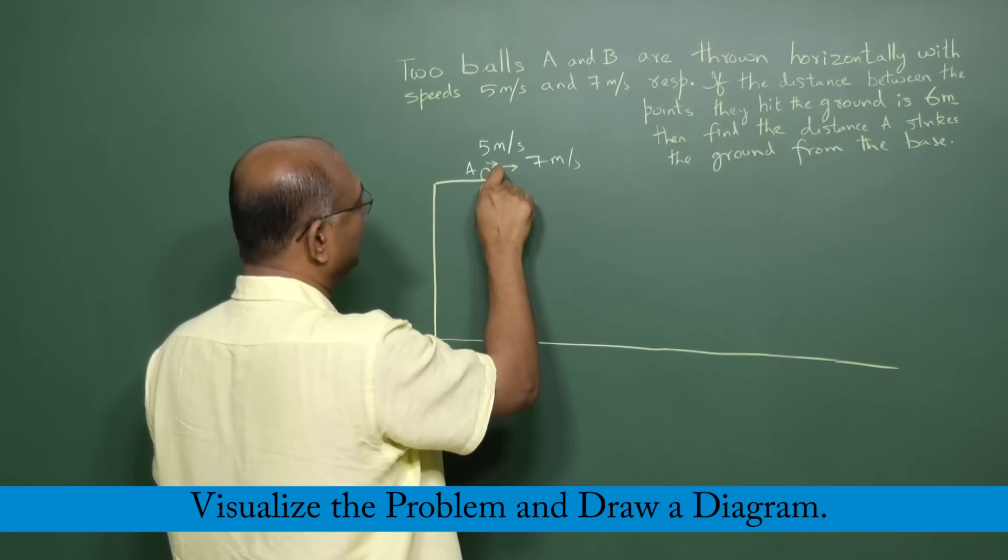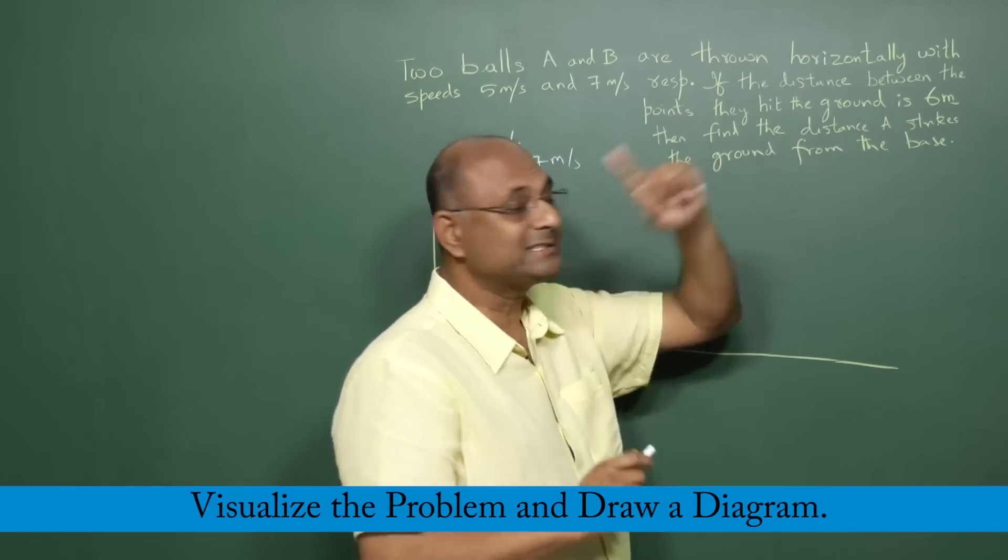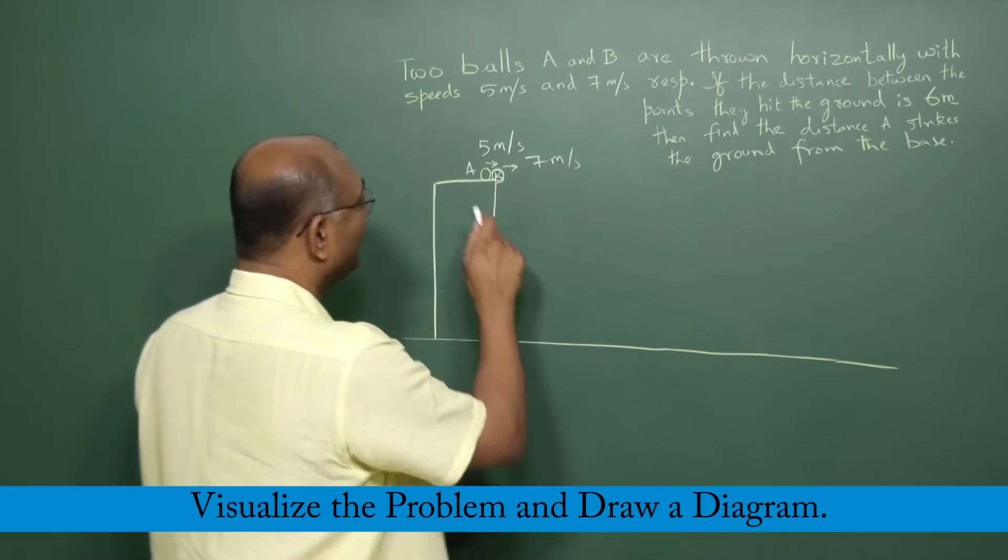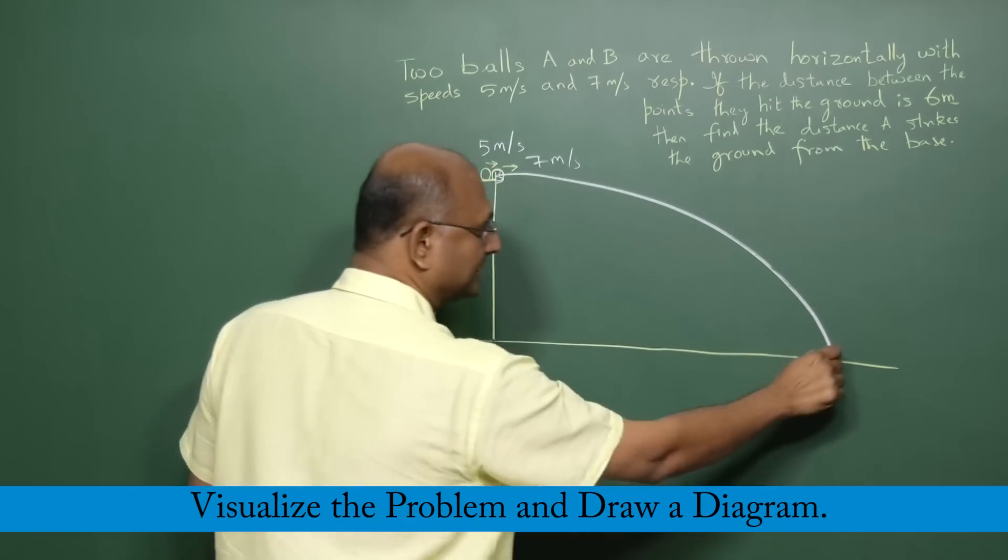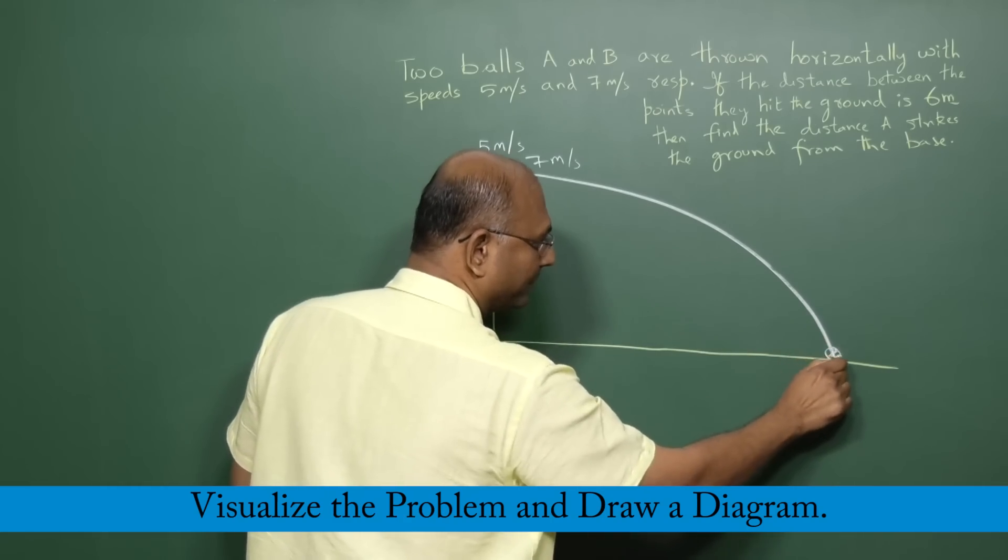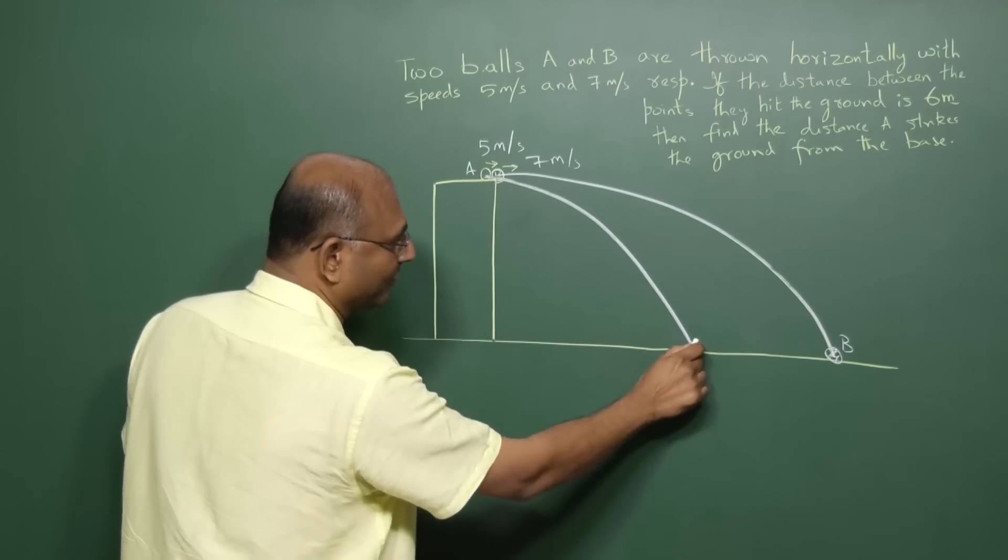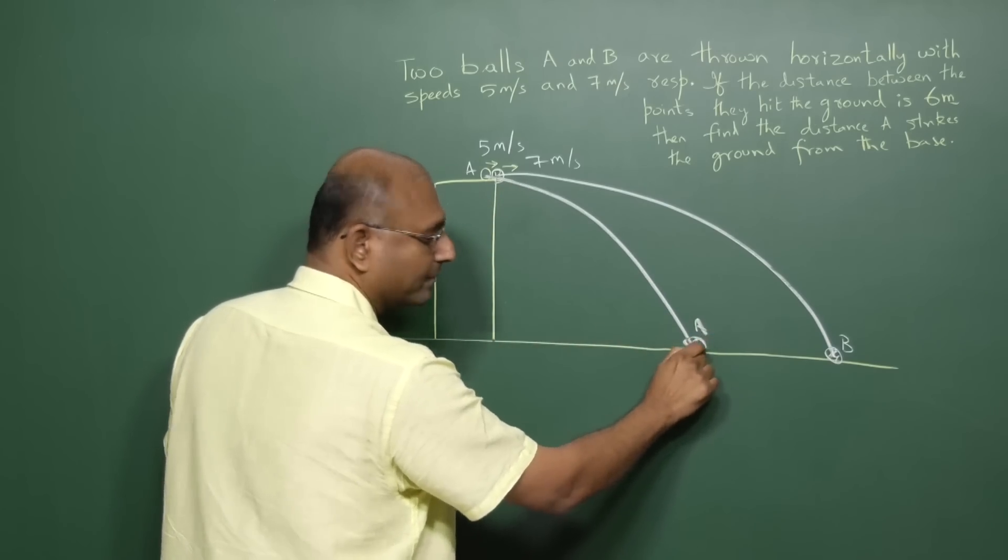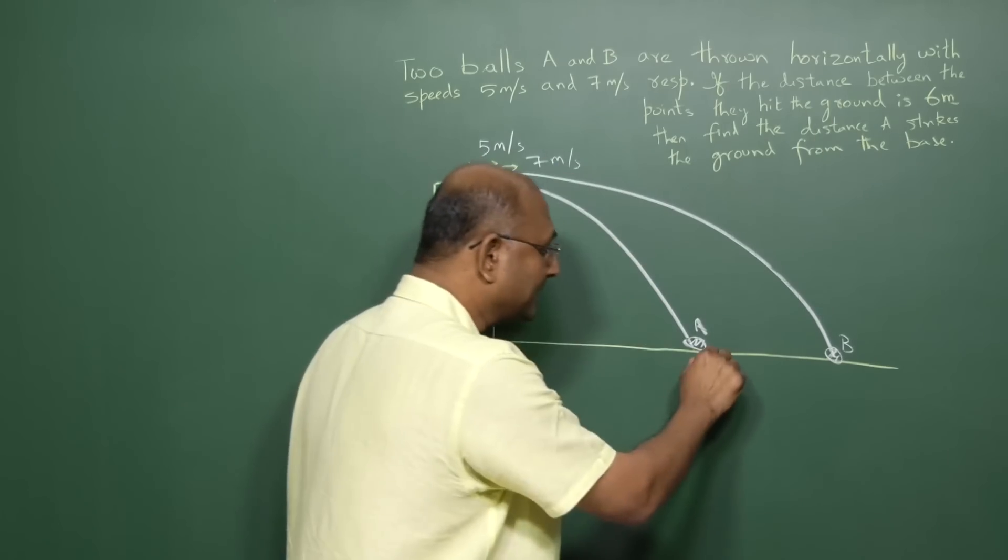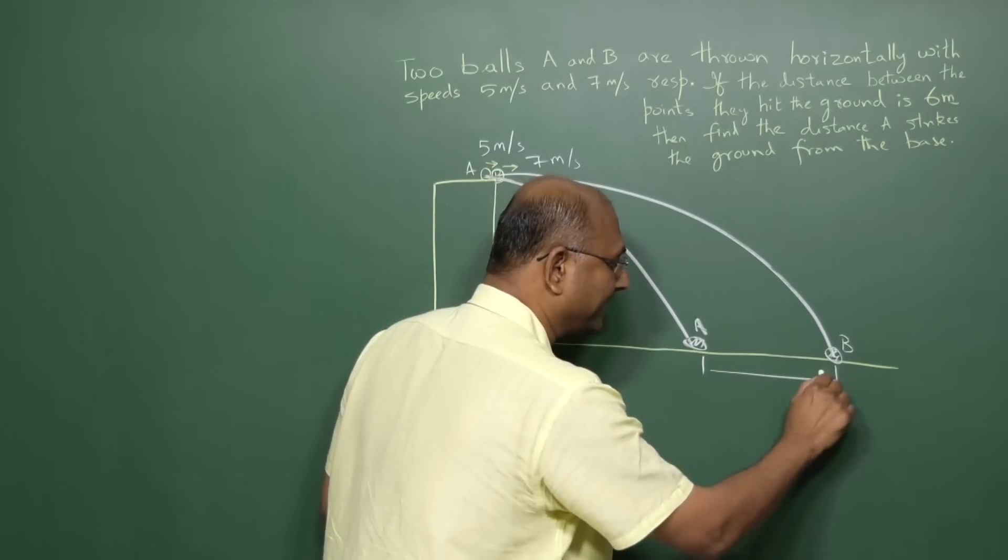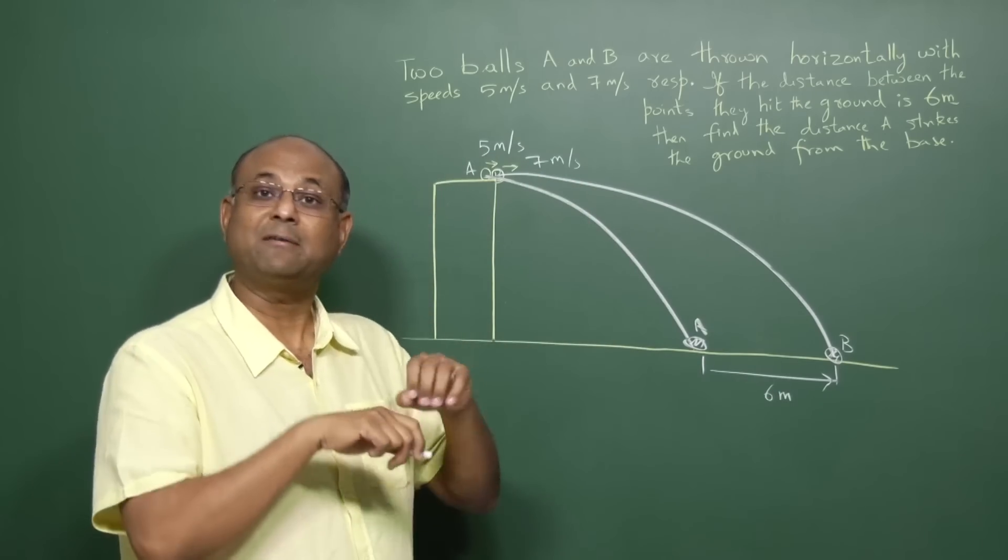Now the distance between the points that they hit the ground at is 6 meters. So B goes and hits the ground there, right? This is the place where B hits the ground, and this is the place where A hits the ground. And what is given? The question says, the information that is given is that this is 6 meters.